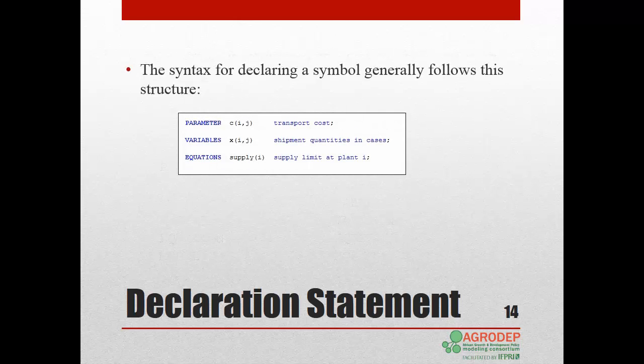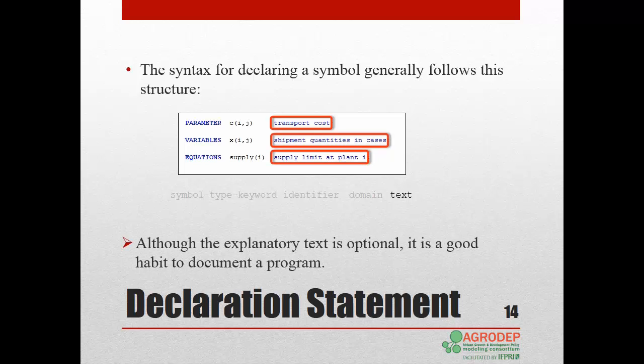The syntax for declaring a symbol generally follows this structure. The symbol type keyword, followed by the identifier or name, followed by the domain in parenthesis, and the text. All statements end with a semicolon. And although optional, adding explanatory text is good practice to document a program.